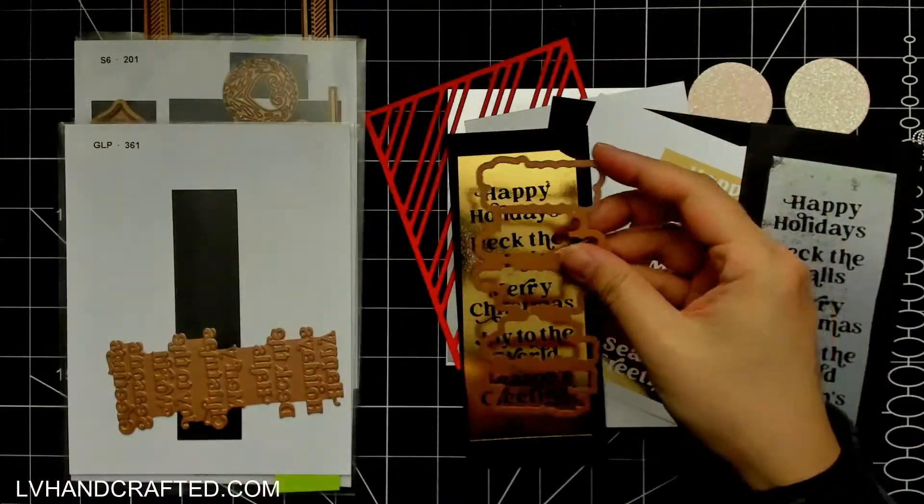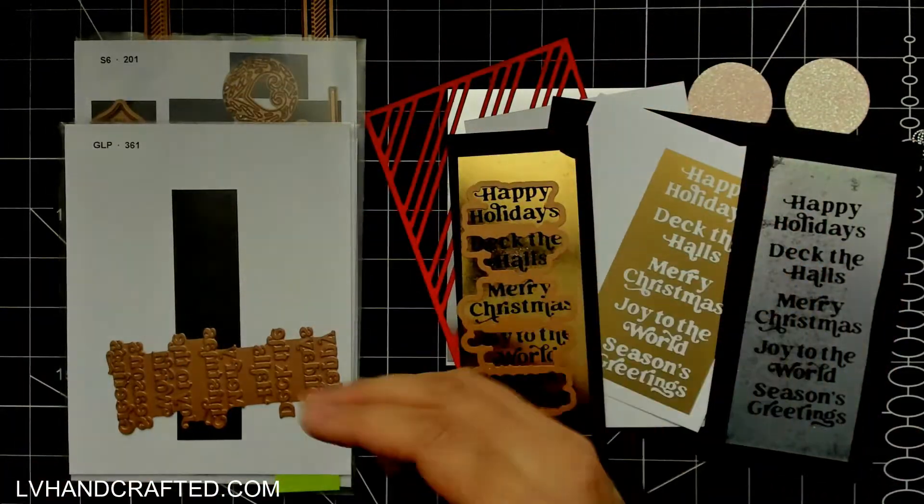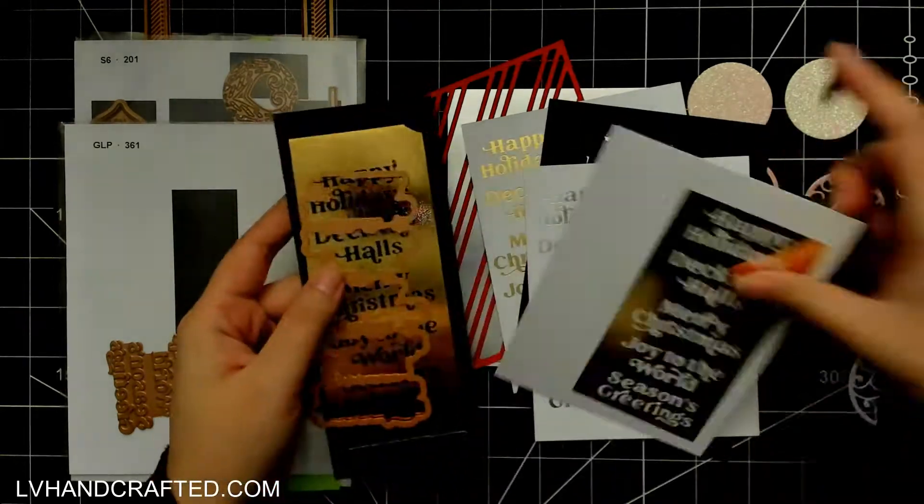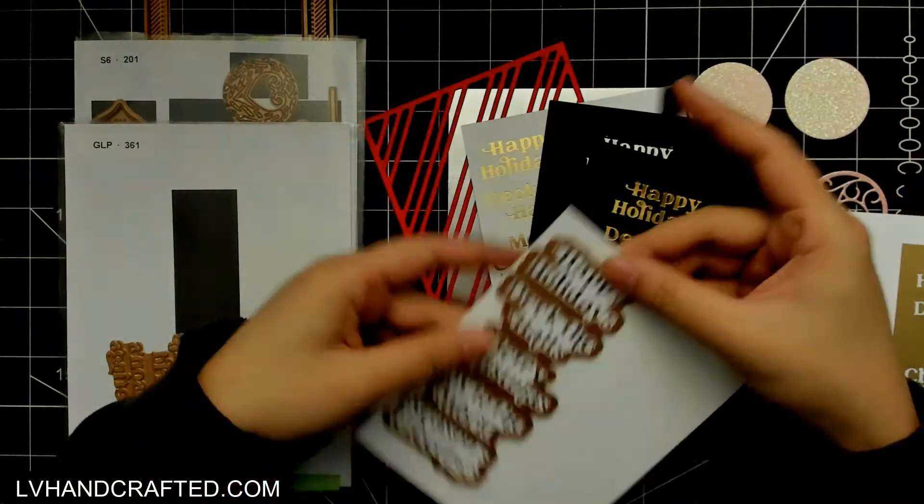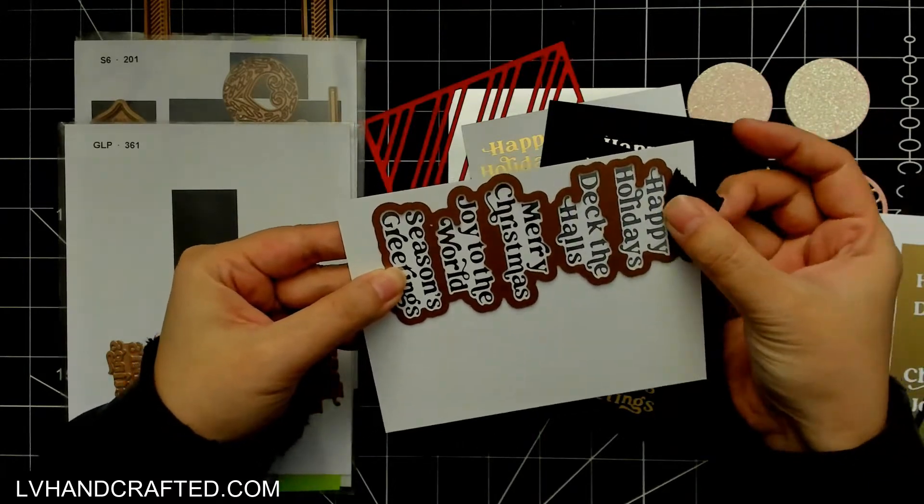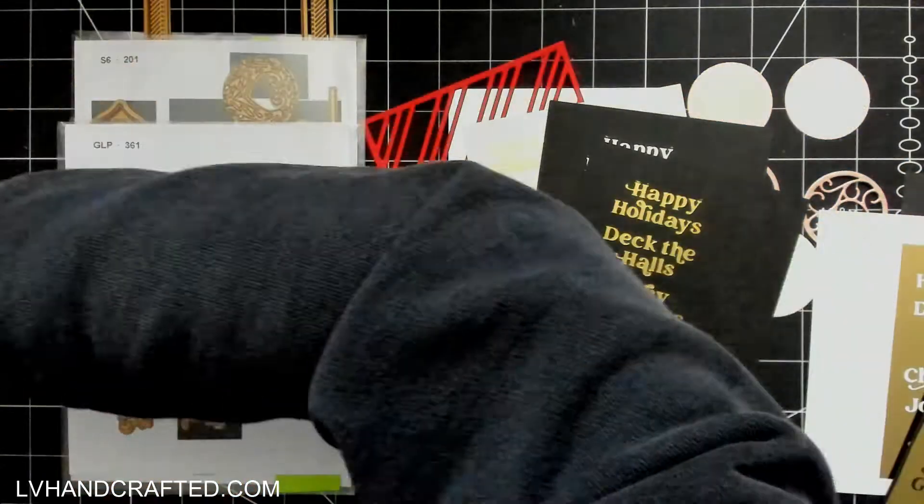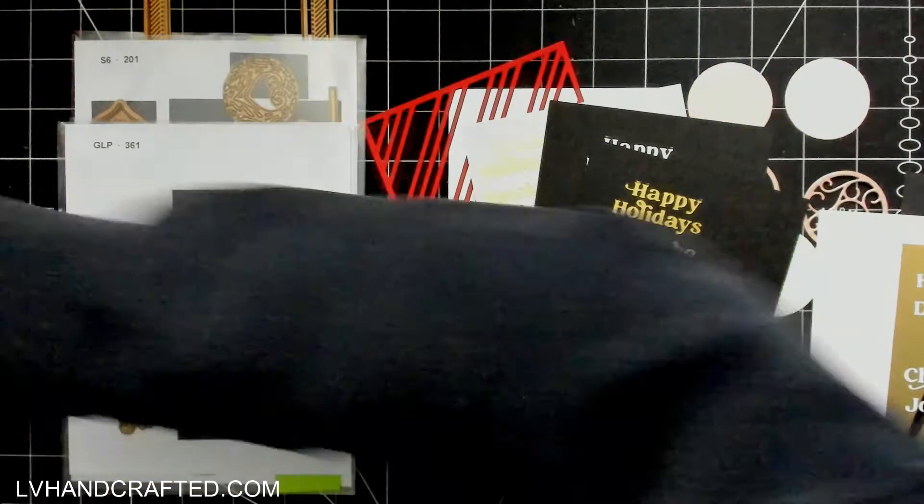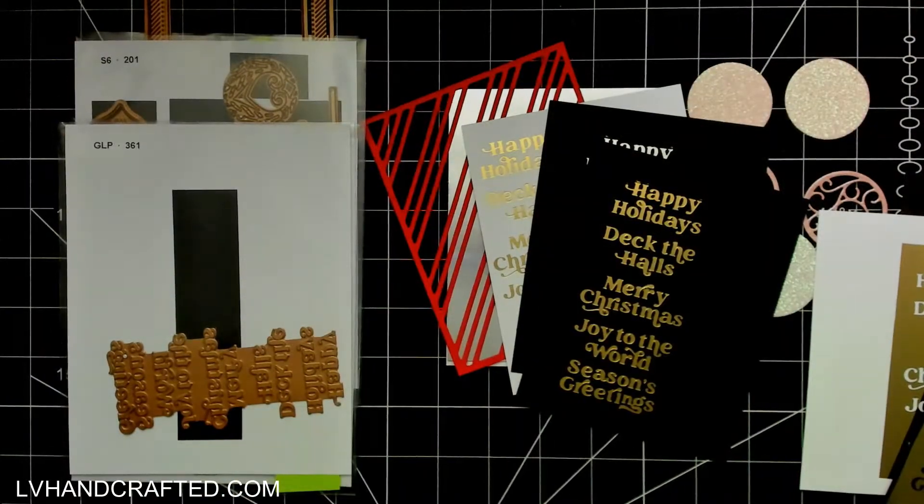You can see how many sentiments I have here and the reason for that is because there's one glimmer plate that gets you, you can glimmer all of your sentiments at the same time and then there's one die plate and you can die cut all of your sentiments at the same time.